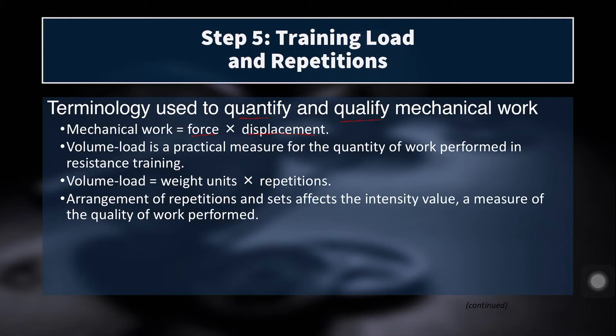If you think of a barbell moving through space and the amount of force to move that barbell through space, the product of those two things is mechanical work. If you're back squatting 100 kilos and you are 5 feet tall, you might be moving that bar through 2 or 3 feet of space. But if you're 6 feet tall squatting 100 kilos, maybe you're moving it 3 to 4 feet through space because you have longer levers — so you're performing more work. Similarly, if you increase the weight from 100 to 110 kilos over the same displacement, that also results in more mechanical work. Either greater displacement or greater force or both will result in greater mechanical work.